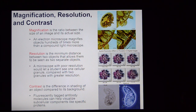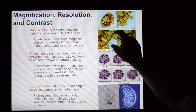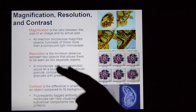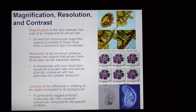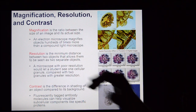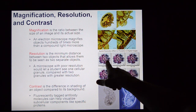Let's talk about some microscopic information. Three terms worthy of consideration when it comes to microscopes: magnification, resolution, and contrast. Magnification deals with how many times you can make something bigger — something at 200x magnification is 200 times bigger than what you can see with the naked eye. Resolution is your capacity to tell the difference between two things at very small size — it's the minimum distance between two objects that allows them to be seen as two separate objects.